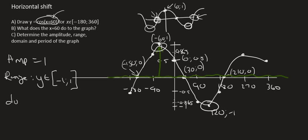The domain, that's your x values. And that's got nothing to do with the graph. It's got to do with what they've given you. So it's between minus 180, and we will include those points, up to 360.